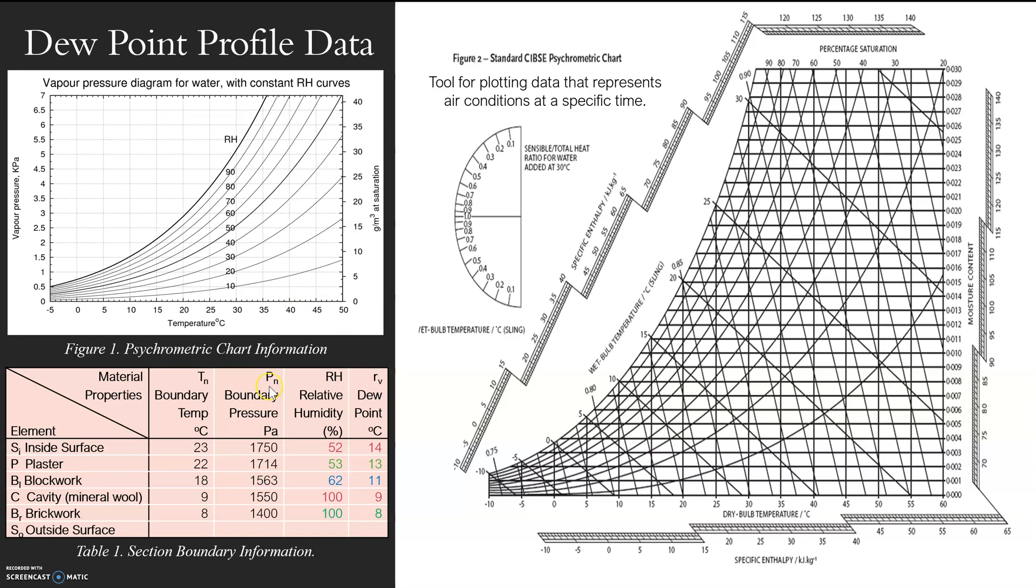First up, we have 23 degrees and we have 1.75 kPa. We've calculated these values and all we need to do is plot them onto this chart to find the relationship and find out if we are hitting 100% saturation. No, we are not. We're hitting 52% relative humidity. We're all good.